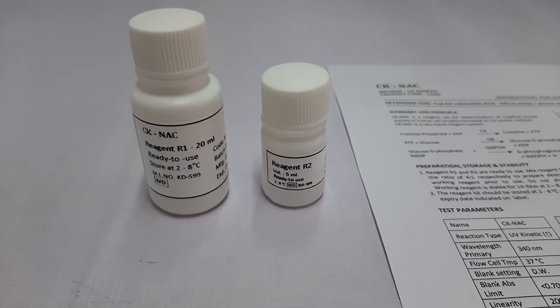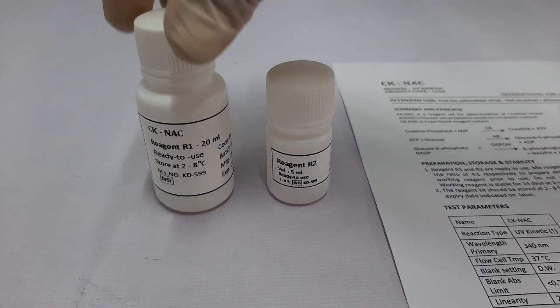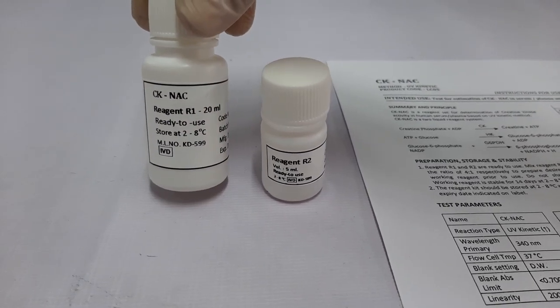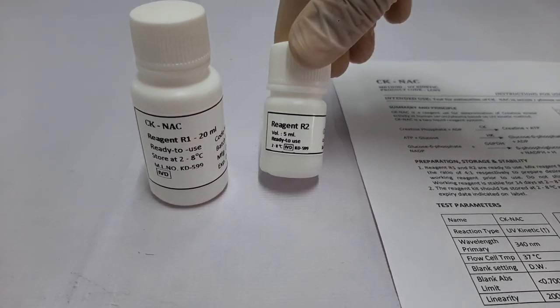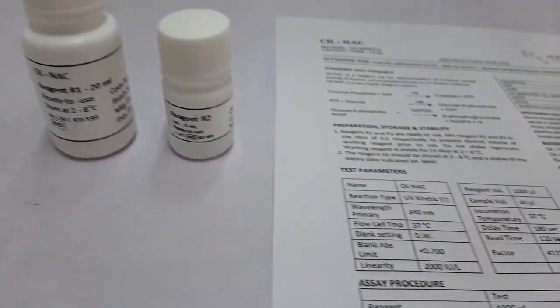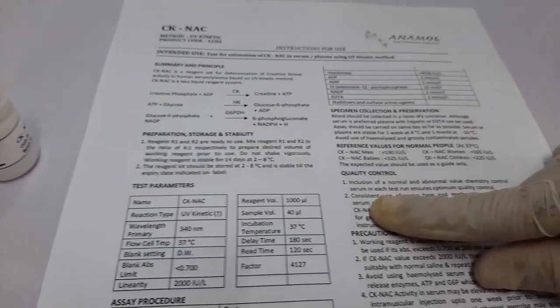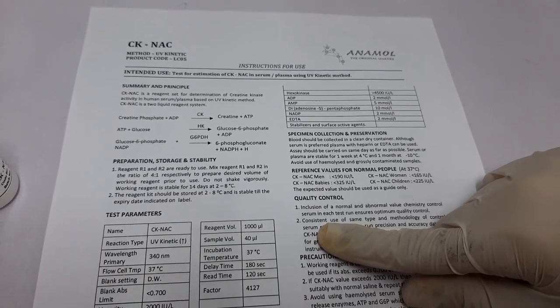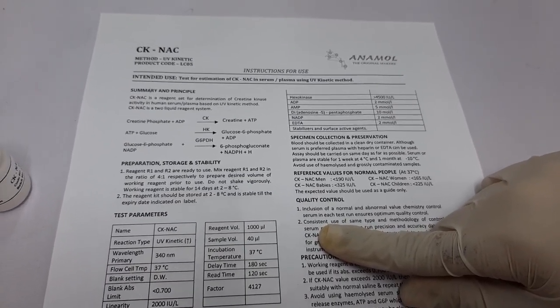First, let's have a look at the kit components. The kit contains one bottle of CK-NAC R1 reagent, one bottle of CK-NAC R2 reagent, and the instructions for use. We recommend all users to read the instructions for use thoroughly before using the test.